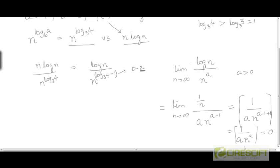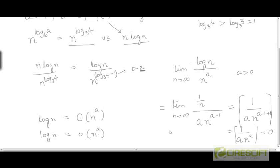So for very large values of n, n^a — even for a very small positive power — grows to infinity. Even the cube root of n goes to infinity. This shows that log n is in little-o of n^a: any positive power of n has a larger rate of growth than log n.